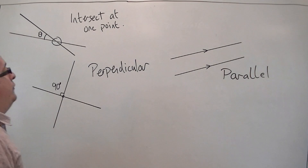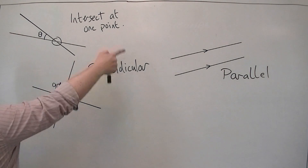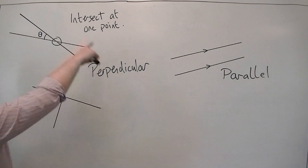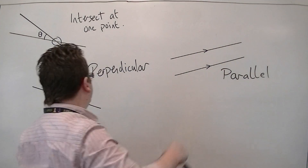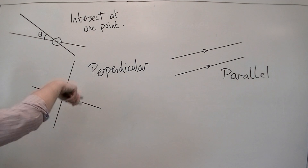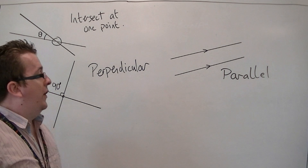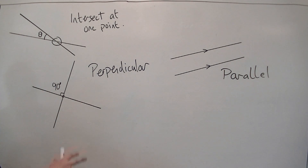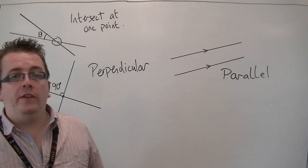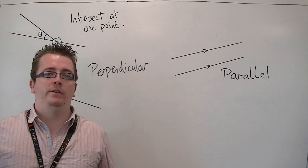So you've got really two situations: either the lines intersect at one point, or the two lines are parallel. And if they intersect at one point at 90 degrees, then they are known as perpendicular. These are the cases we're going to be looking at, and what this means in terms of the equation of the line.